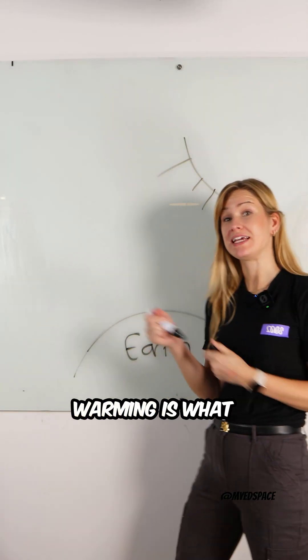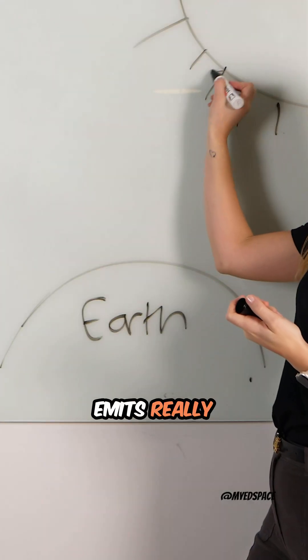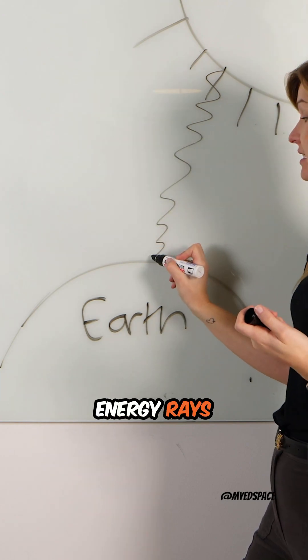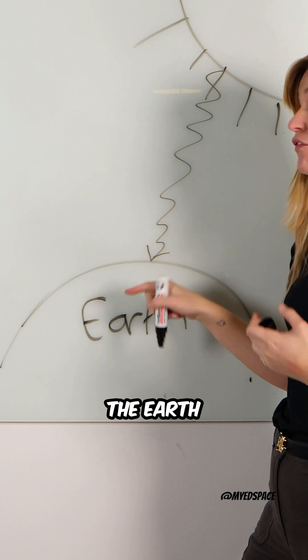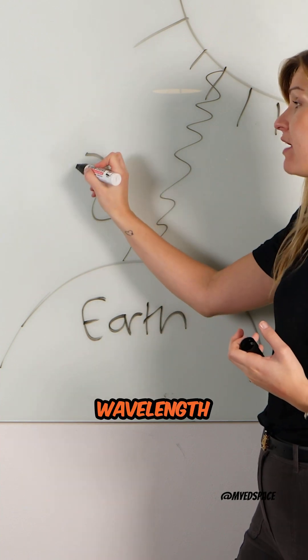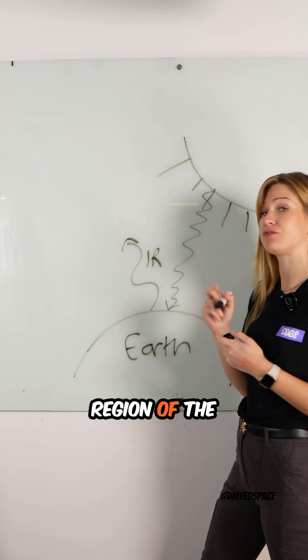The physics to explain global warming: the sun emits short wavelength, high-energy rays. When they hit the Earth, the Earth reflects longer wavelength rays, normally in the infrared region of the spectrum.